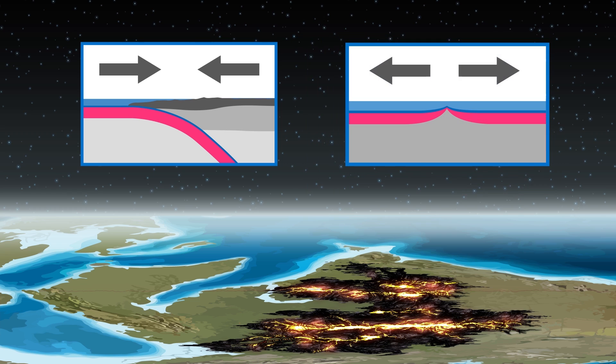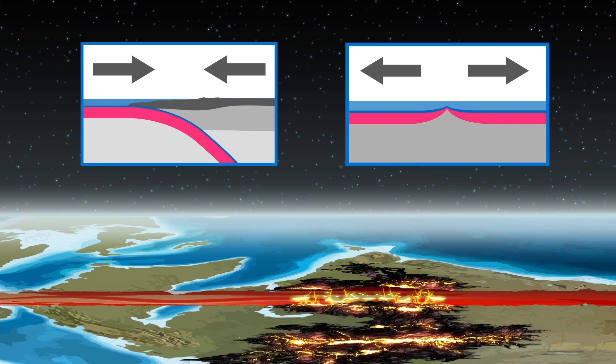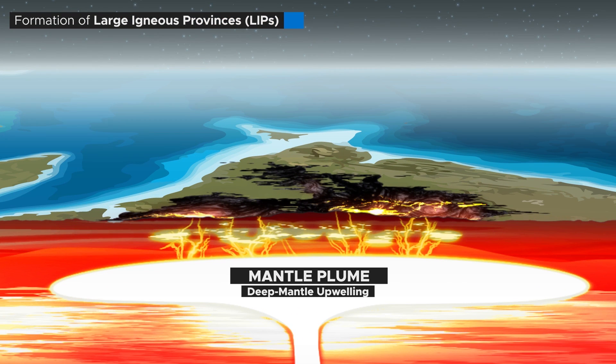But how do mantle plumes fit into this picture? Surprisingly little. The volcanic processes we just covered are all the result of mechanisms inside the uppermost layer of the Earth, roughly the first 100 to 200 kilometers. Mantle plumes, on the other hand, have a much deeper origin.